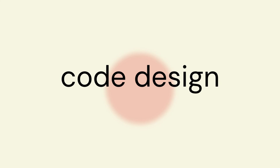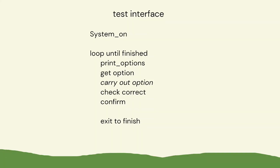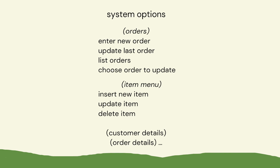We need to test our system, so we need an interface — and we can do that in Python. Essentially we want a menu where the user loops through options: enter a food item, look at the menu, create a new order, create a new order line, etc. We need to be able to create and update orders, put in, update, and delete menu items like food items, and get customer and order details — connecting to the database to get and put data.